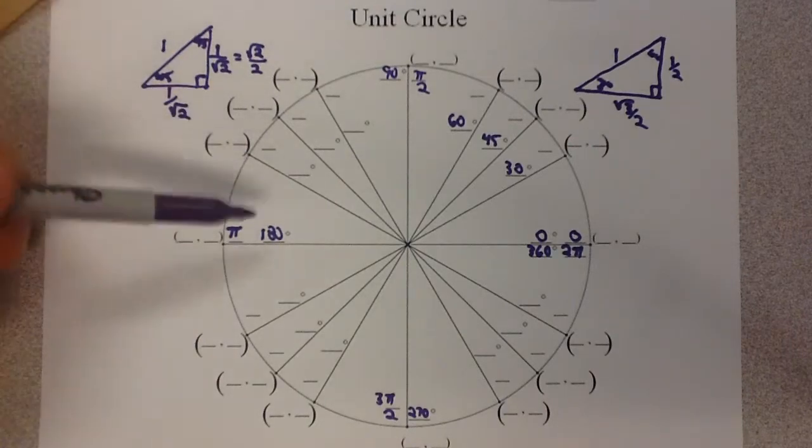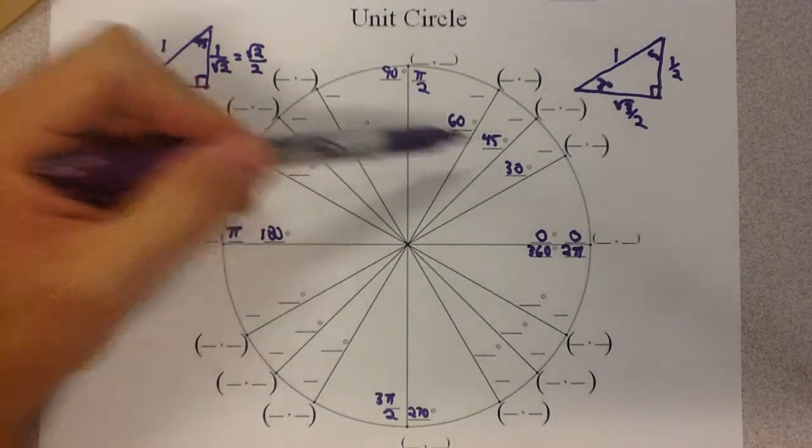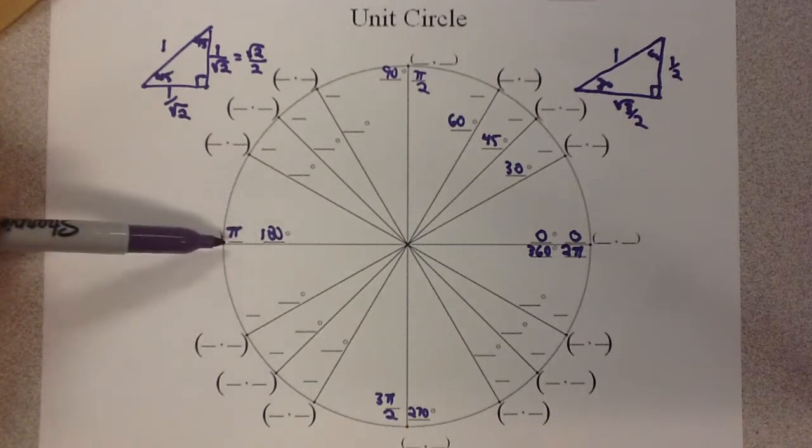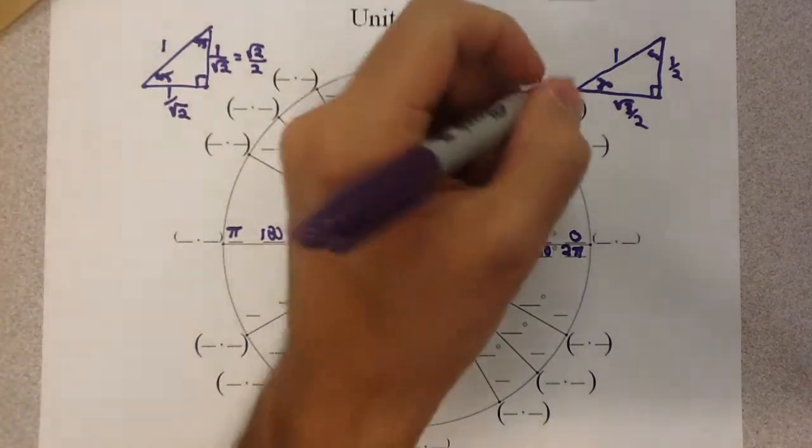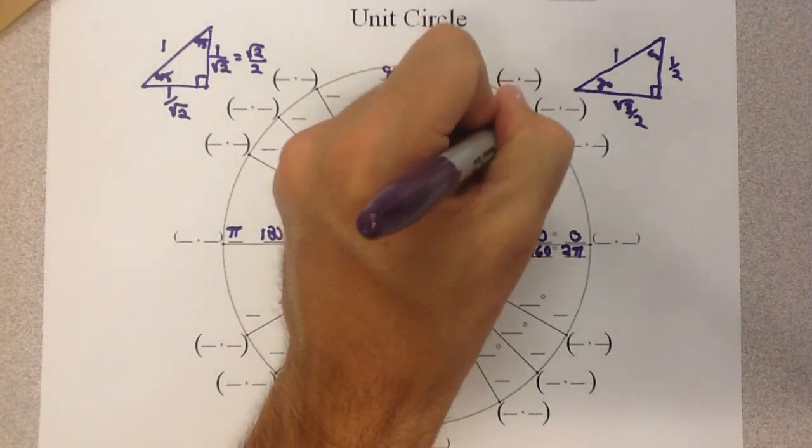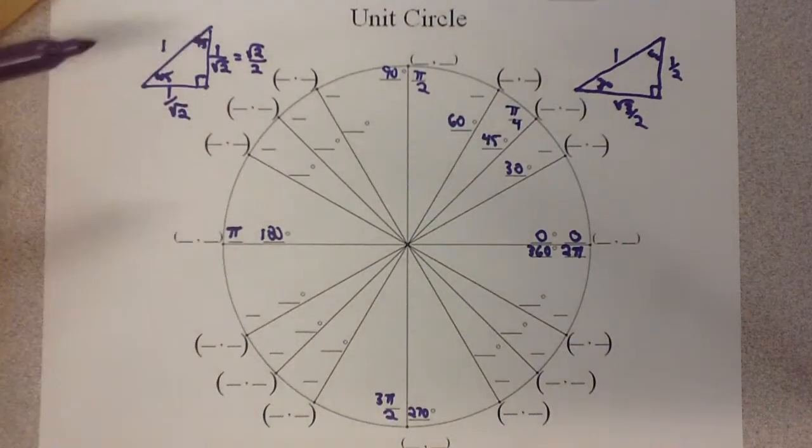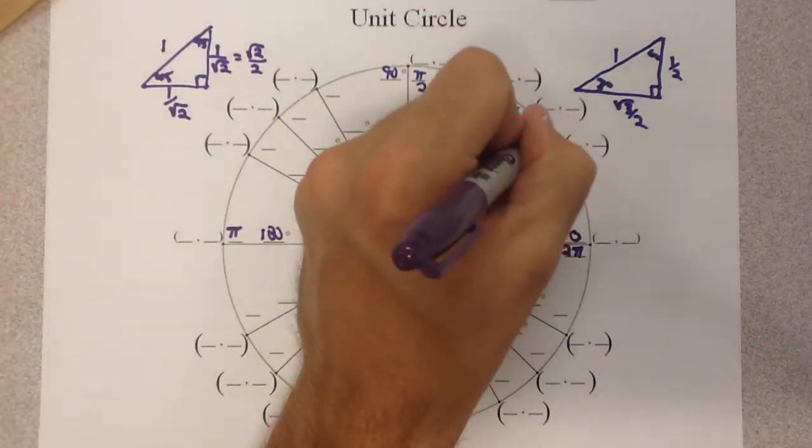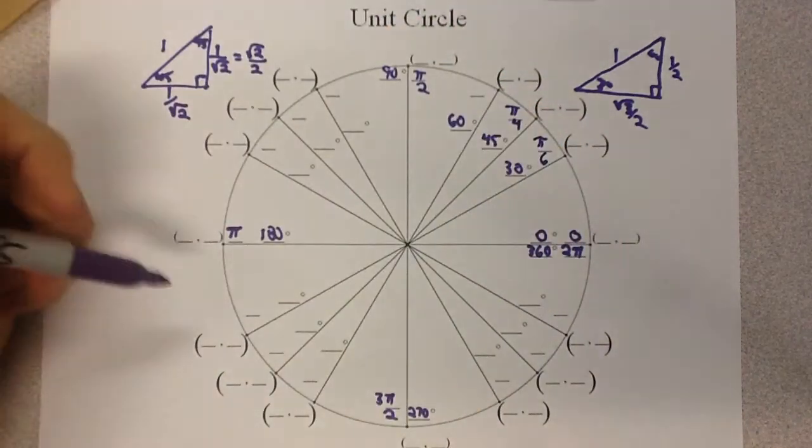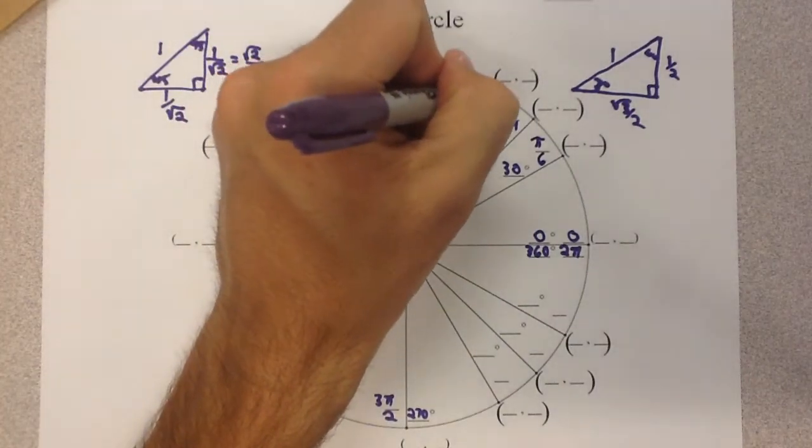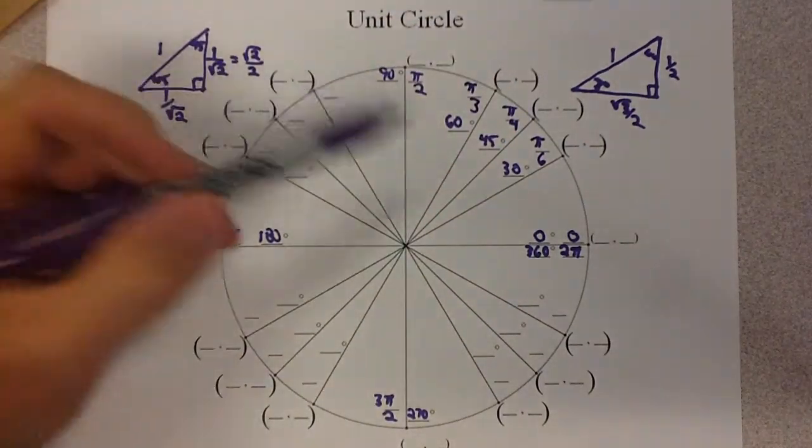Now, let's start with the radian measures of those. If I went from 180 to 45 degrees, I would divide by 4. So I'm going to do the same thing with π, divide that by 4, and we get π over 4. 180 to 30, I divide by 6, so that's going to be π over 6. 180 to 60 is going to be π over 3, because I would divide by 3.